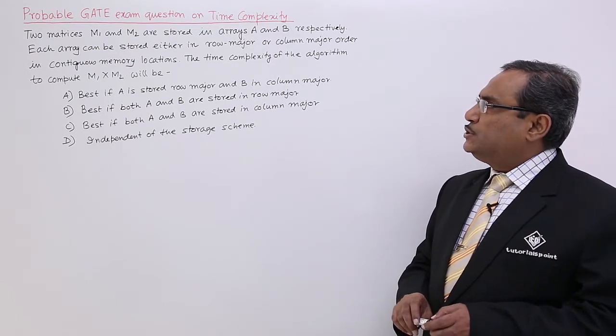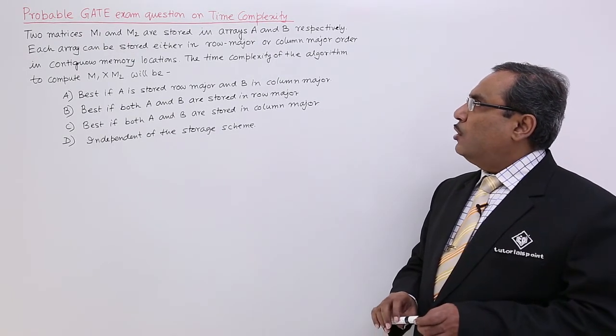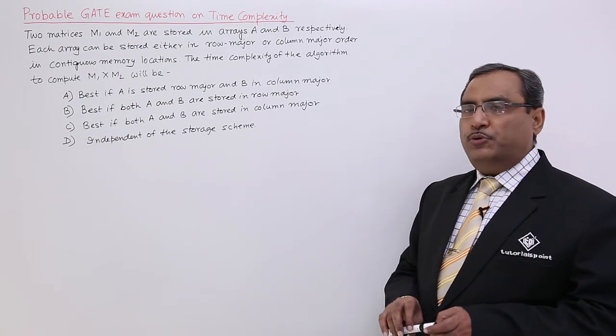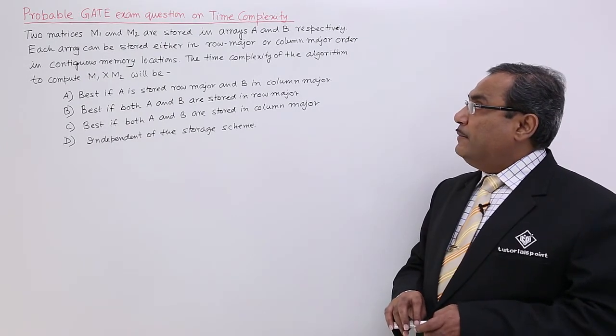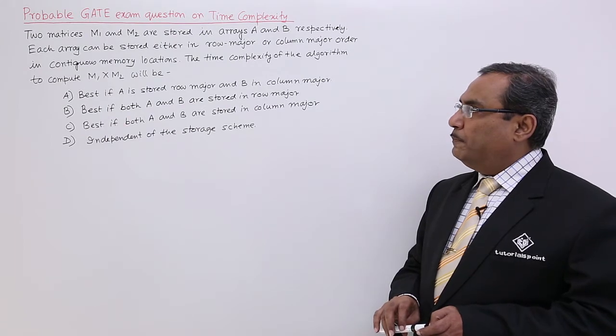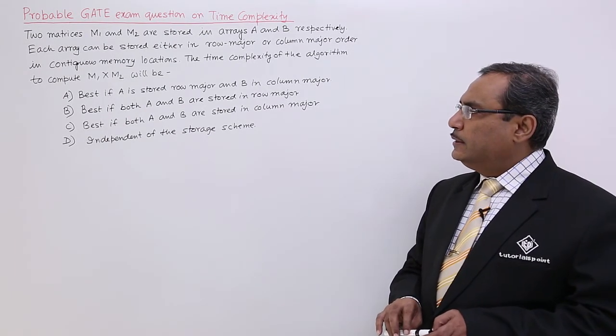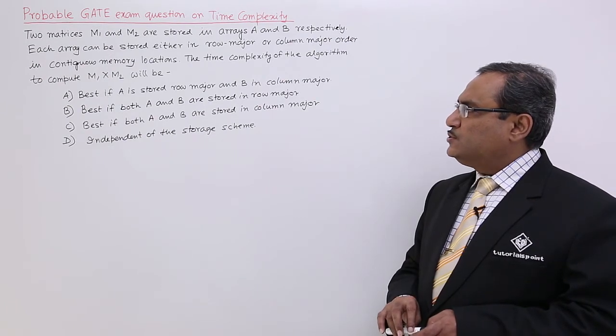Each array can be stored either in row major or column major order in continuous contiguous memory locations. The time complexity of the algorithm to compute M1 into M2 will be: